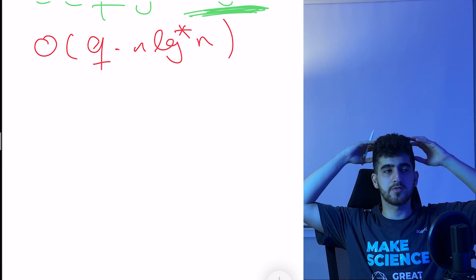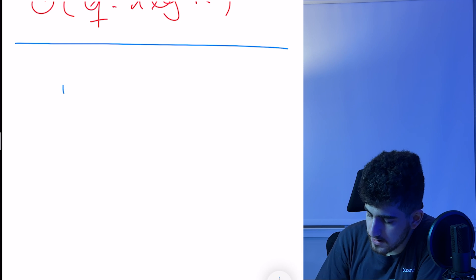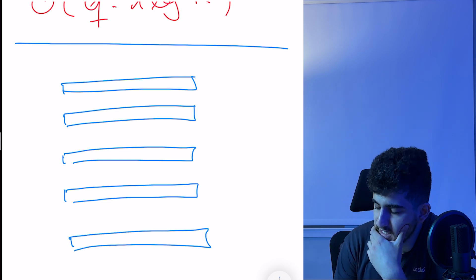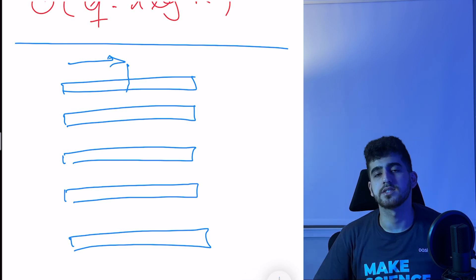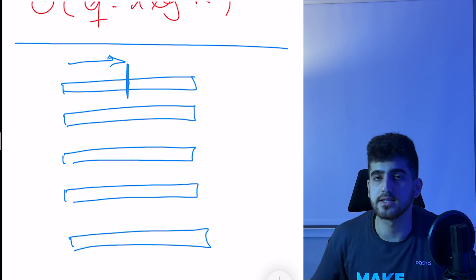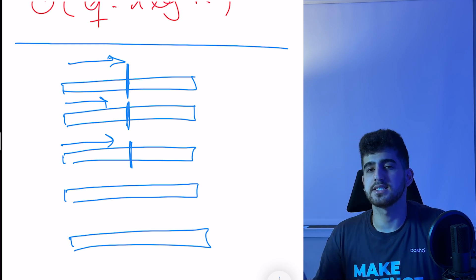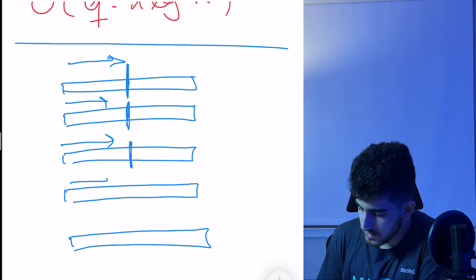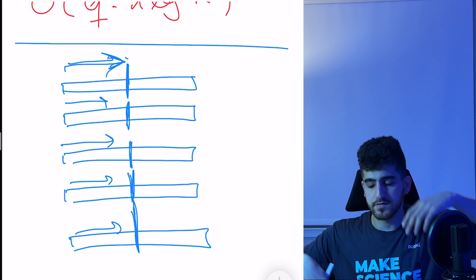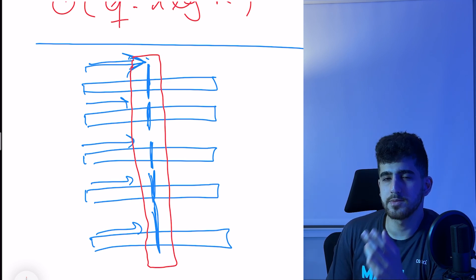Analyzing the binary search solution, for each query we keep adding the same edges up to the midpoint and checking connected component sizes. Across all queries, we are repeatedly adding the same edges — this is redundant. The idea to optimize is to add these edges only once and simultaneously answer all binary search queries, checking for each query whether its answer is less than or equal to mid or greater.